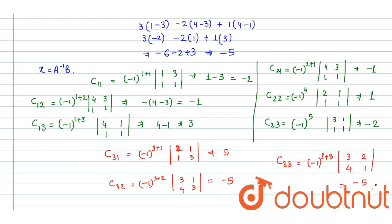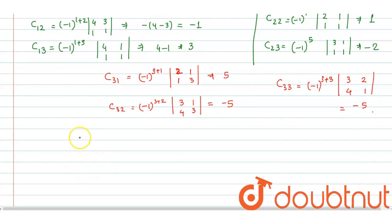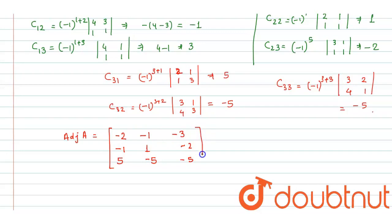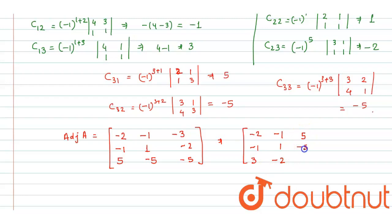Now we will find its adjoint matrix. To find the adjoint matrix, we transpose the cofactor matrix and get: row 1 is minus 2, minus 1, 5; row 2 is minus 1, 1, minus 5; row 3 is 3, minus 2, minus 5. So the adjoint A is written as the matrix with rows (minus 2, minus 1, 3), (minus 1, 1, minus 2), (5, minus 5, minus 5).